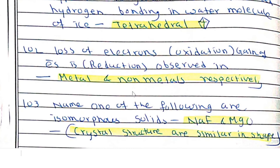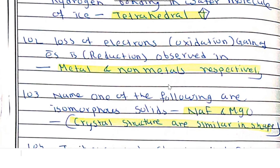Loss of electrons is oxidation, and gain of electrons is reduction. These are observed in metals and nonmetals respectively — metals lose electrons (oxidation) and nonmetals gain electrons (reduction).